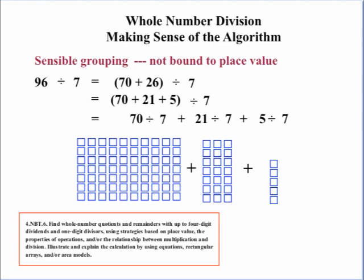The key here is to use sensible grouping where we're not bound to place value. How can we take the 96 and break it up into smaller chunks that are divisible by 7? Where you can take a nice whole number of groups of 7 out of it. So, if we take the 96, that's 70 plus 26 because the 70 is easily divisible by 7.